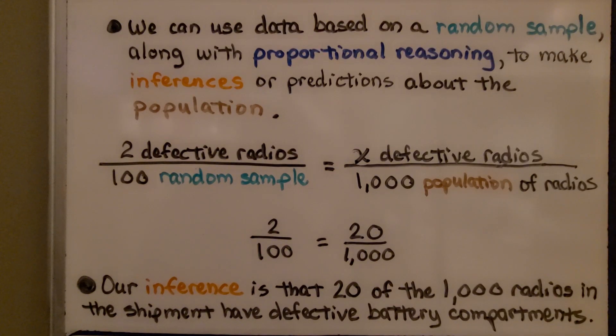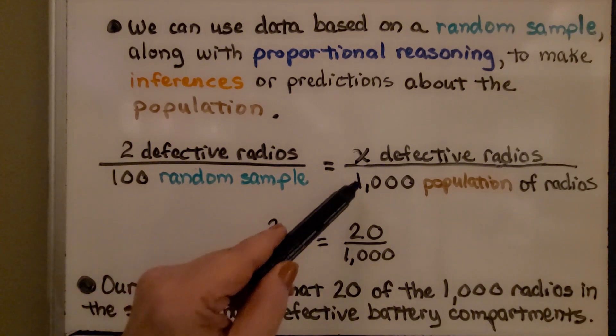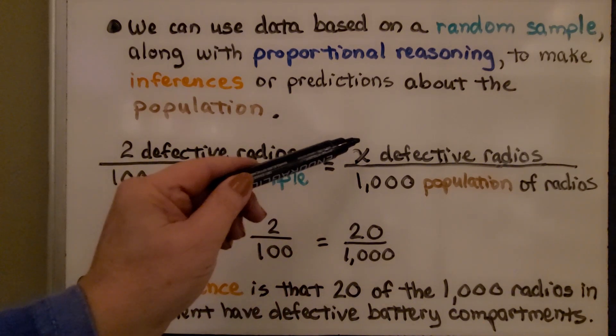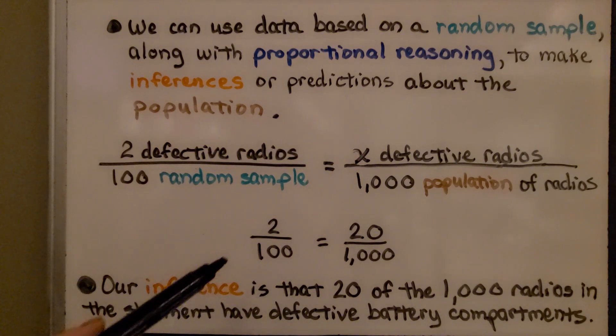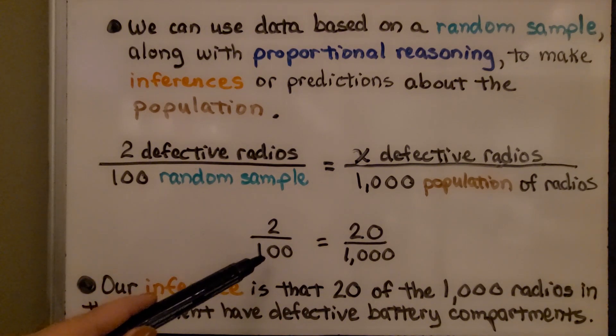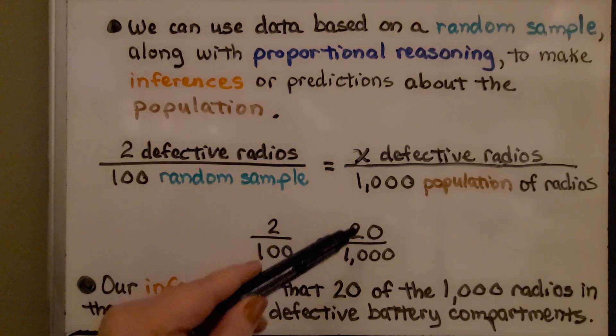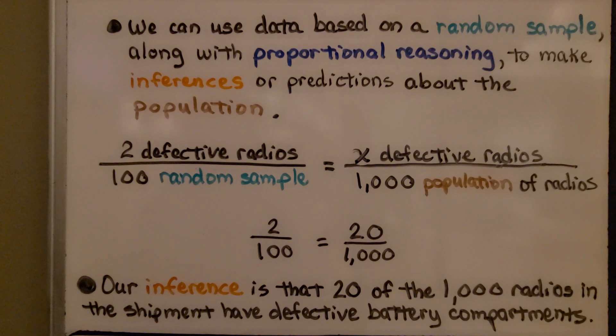We can use data based on a random sample along with proportional reasoning to make inferences or predictions about the population. We have two defective radios found out of 100 random sample. If the population was 1,000, we have x defective radios out of a 1,000 population of radios. As a proportion, we have 2/100 equals 20/1000. Our inference is that 20 of the 1,000 radios in the shipment have defective battery compartments.